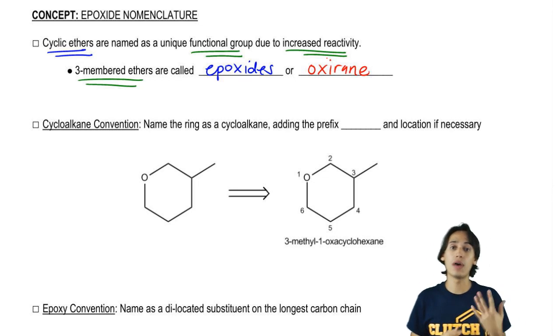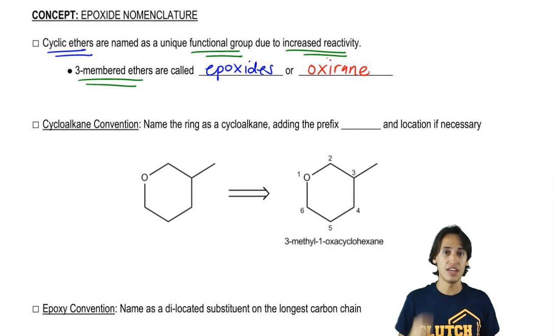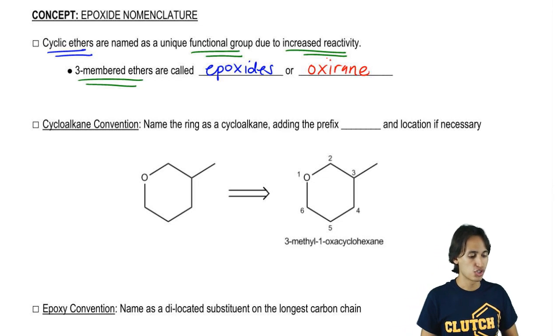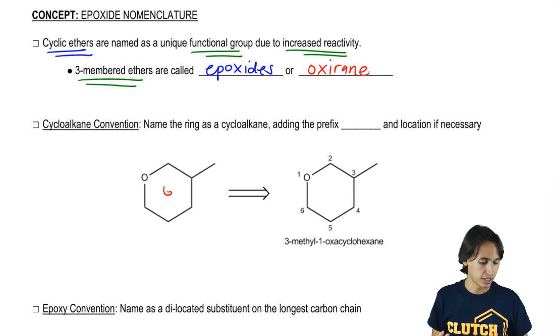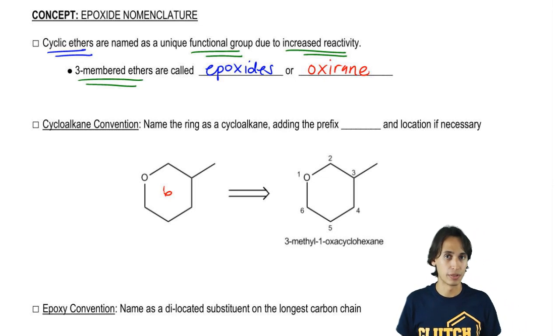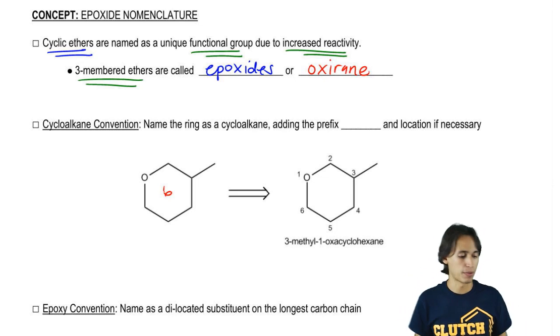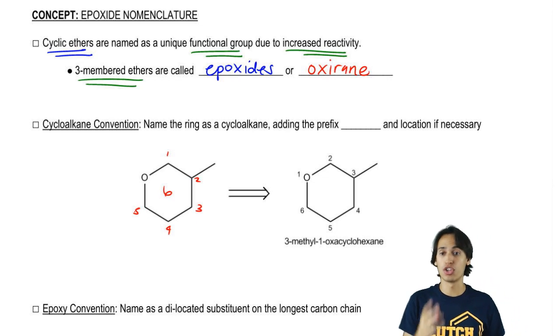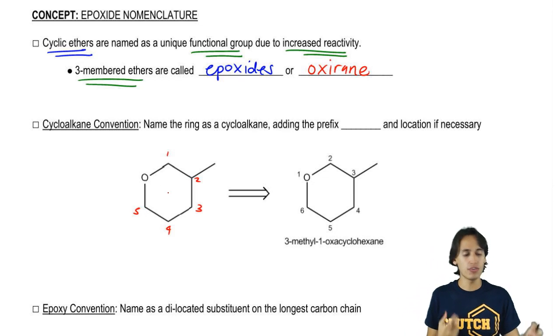Let's start off with what we call the cycloalkane convention. In this type of naming system, what we do is we name the entire ring as if it was an alkane first. As you can see here, I have a six-membered ring. But how many of those atoms are actually carbons? Only five of them are. I've got one, two, three, four, five. Now you might be wondering why I started the one there. I didn't need to. I'm just using that as an example right now just to count carbons.